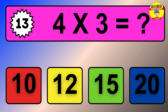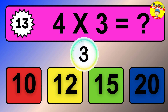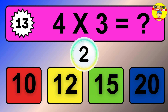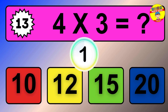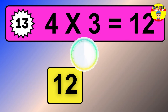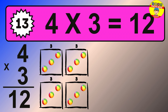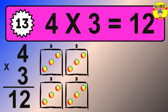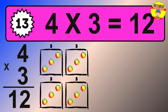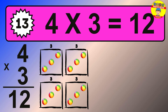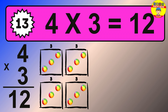Question 13. 4 times 3 equals what? The answer is 4 times 3 is 12. To calculate, we have 4 groups with 3 balls each one. So how many balls do we have? 12 balls.